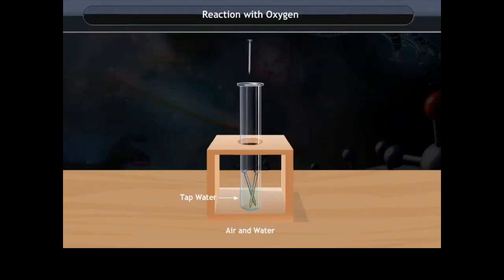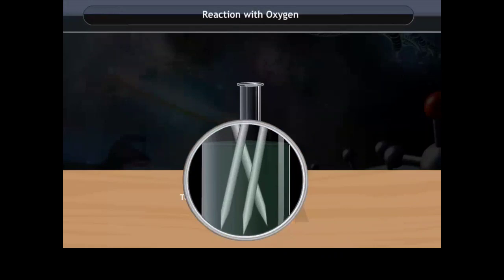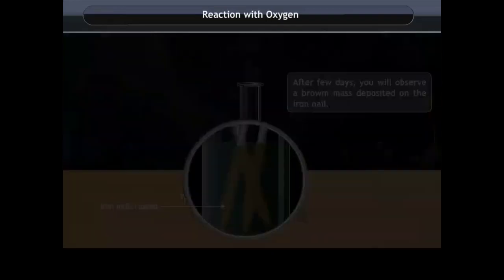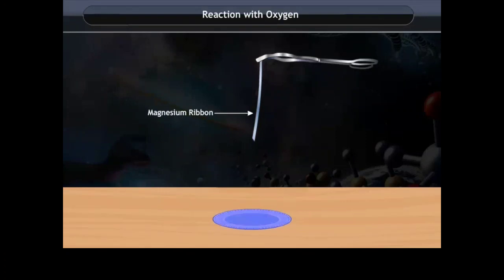Reaction with oxygen: You must have observed that when a piece of iron is kept in the open for some time, it gets converted into a brownish substance. This brownish substance is called rust and the process is called rusting. Rust is formed when iron reacts with oxygen present in air to form iron oxides.